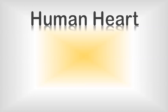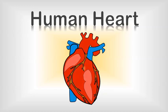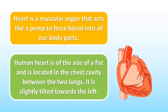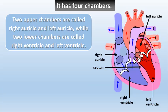The human heart is a muscular organ that acts like a pump to force blood into all our body parts. The human heart is the size of a fist and is located in the chest cavity between our two lungs. It is slightly tilted towards the left.